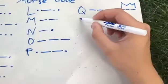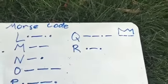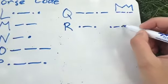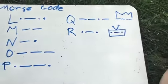Next we have R, and it's dot, dash, dot, and this one we would turn into a radio. So if we draw it out, and then draw a box around it, maybe some antenna, a radio.